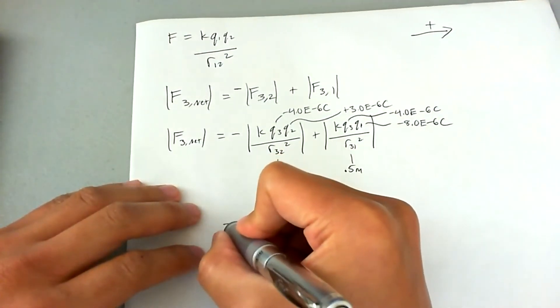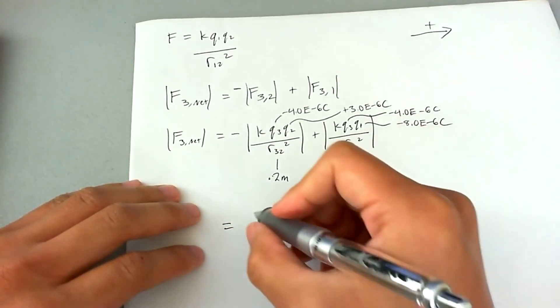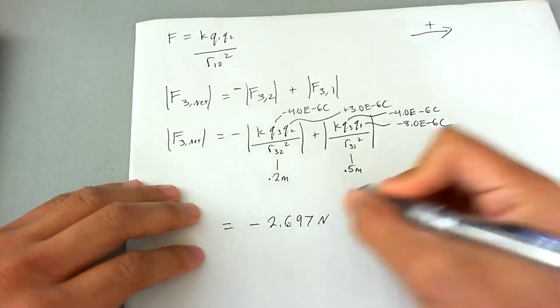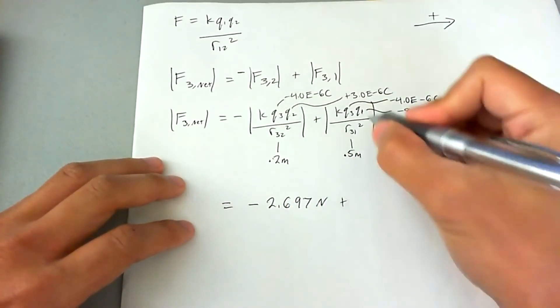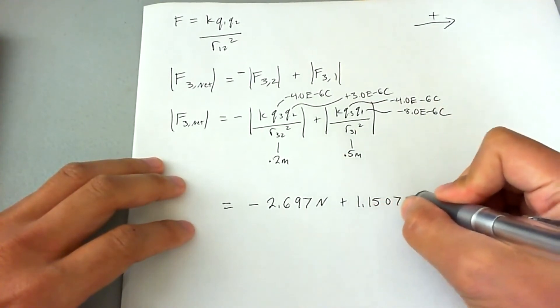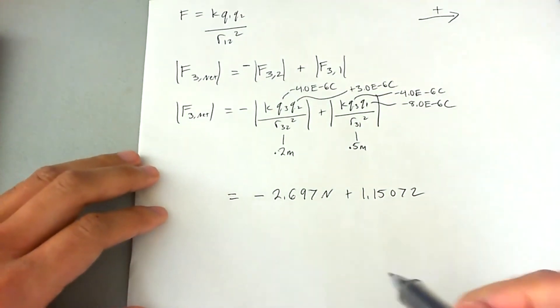So doing the calculation, this ends up being the following. And the second term ends up being... adding these two up together...